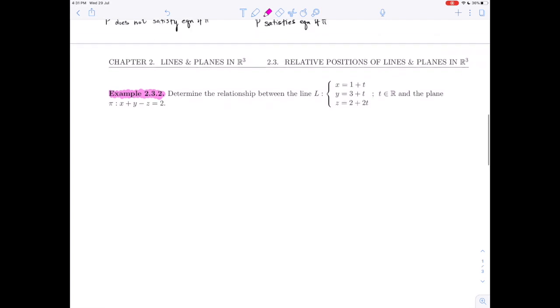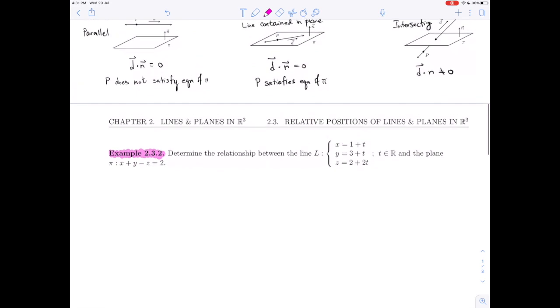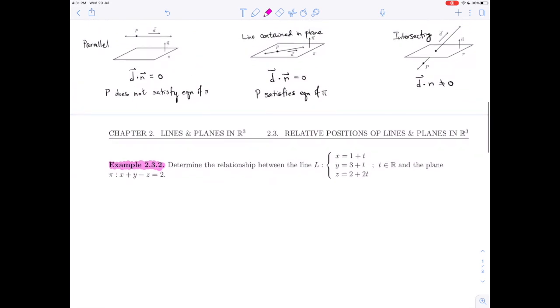So let's review quickly what we saw in a previous video, the possibilities for the position of lines and planes. A line can be parallel to the plane, the line can be contained in the plane, and the line and the plane can be intersecting.